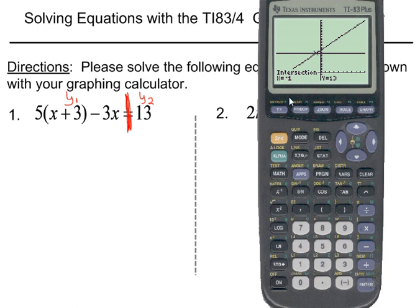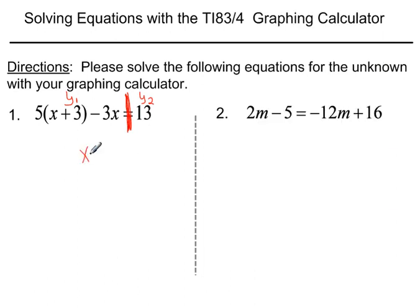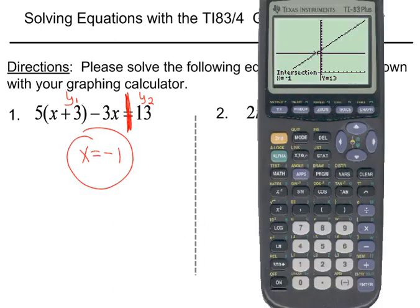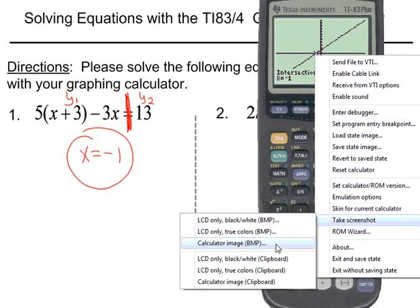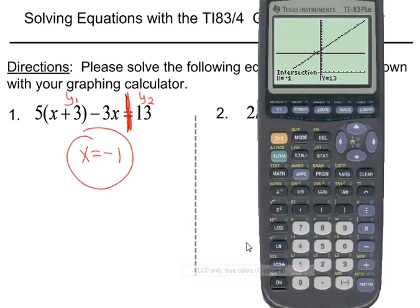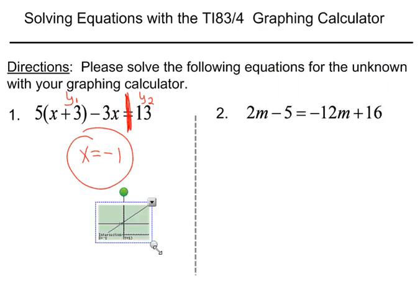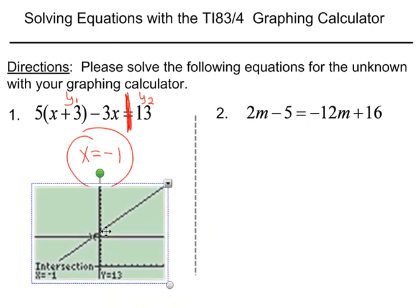And what we see here is we're looking for the x value. It says x equals negative one. So, that is the answer, x equals negative one. I'll even take a quick picture of that. We see it's the point of intersection. It's the x value. The y value we don't need here because we're solving for x in this problem.